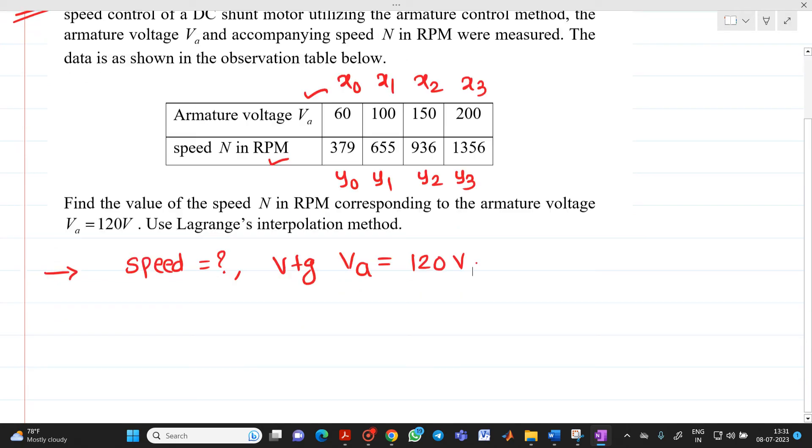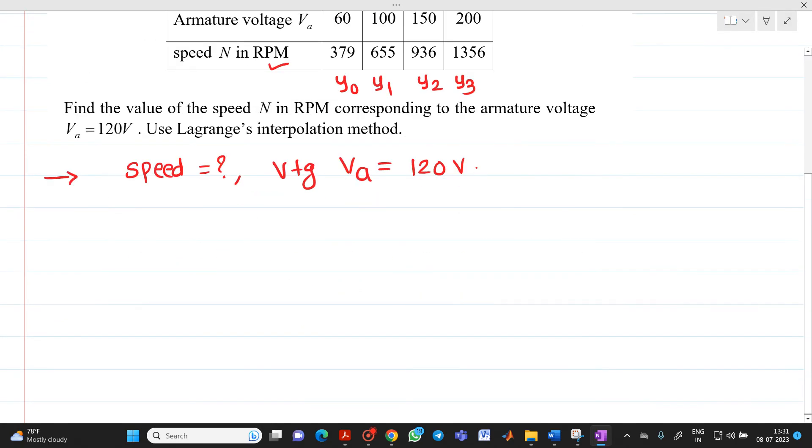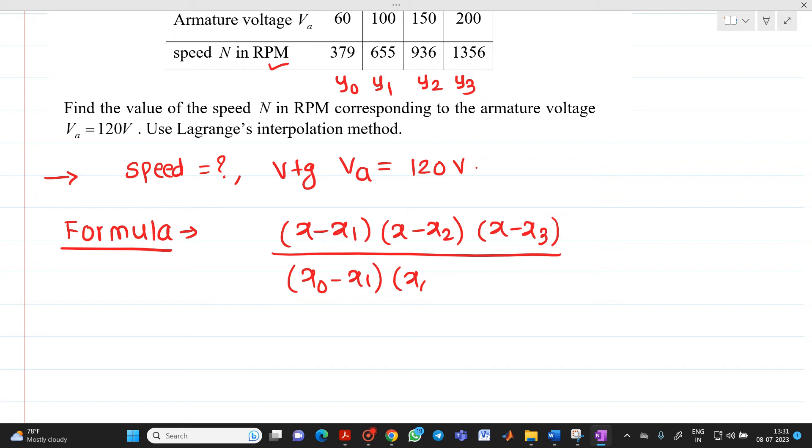So, instead of VA and N, what I will do? I will write it in a form of X and Y. So, let me write first formula. X minus X1 into X minus X2 into X minus X3 divided by X0 minus X1, X0 minus X2, X0 minus X3 into Y0.